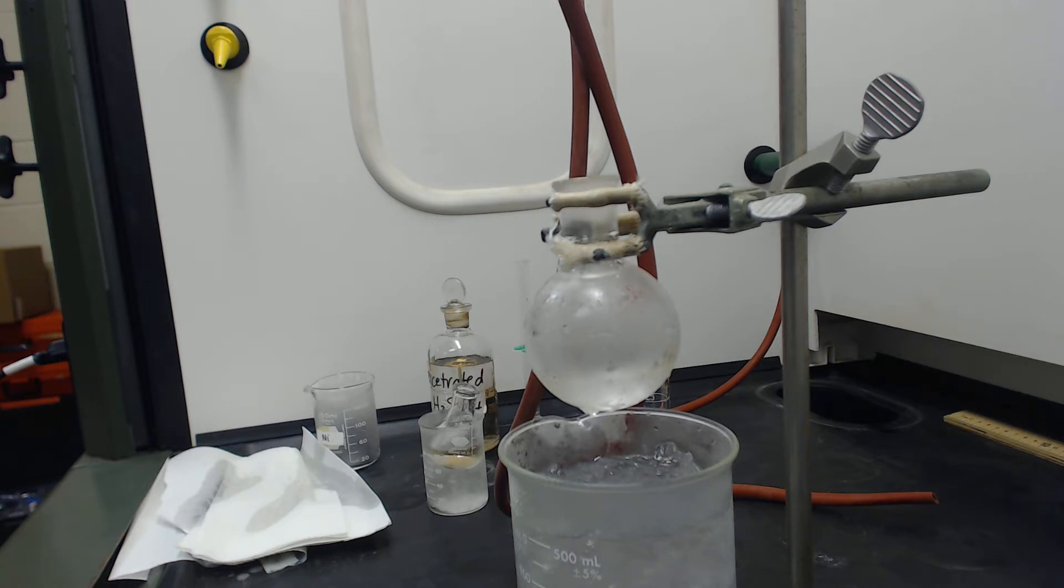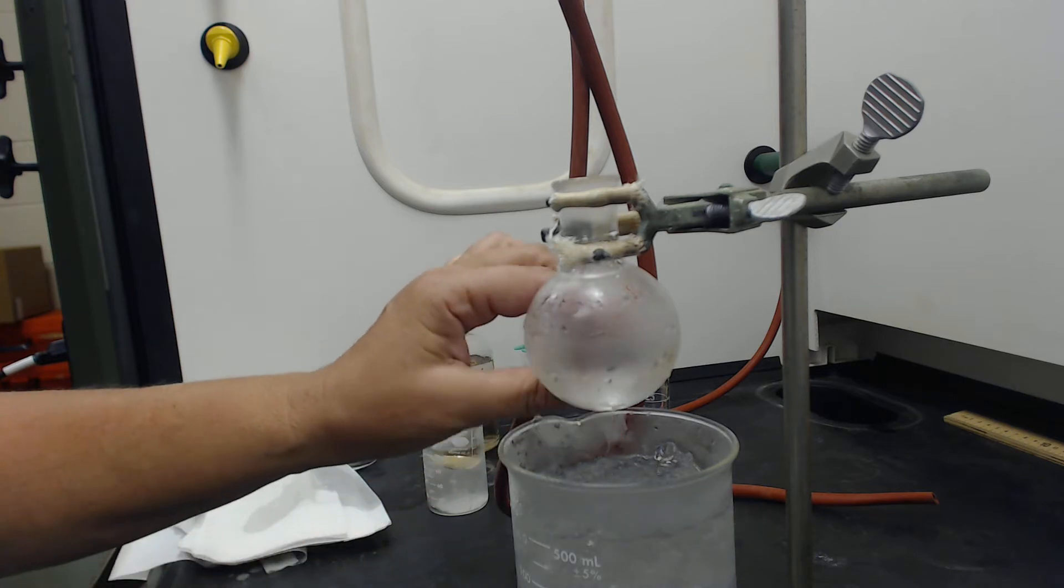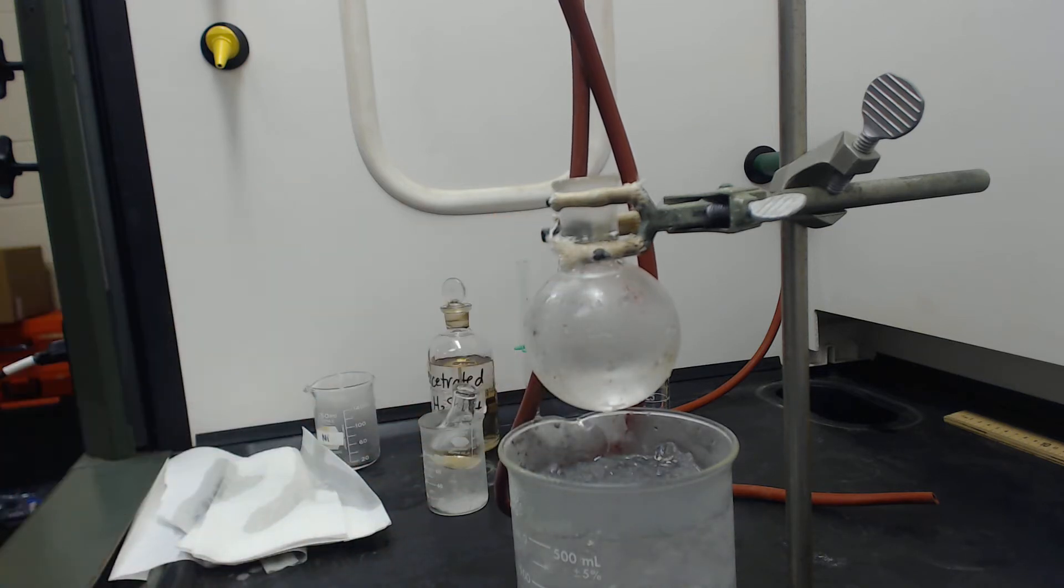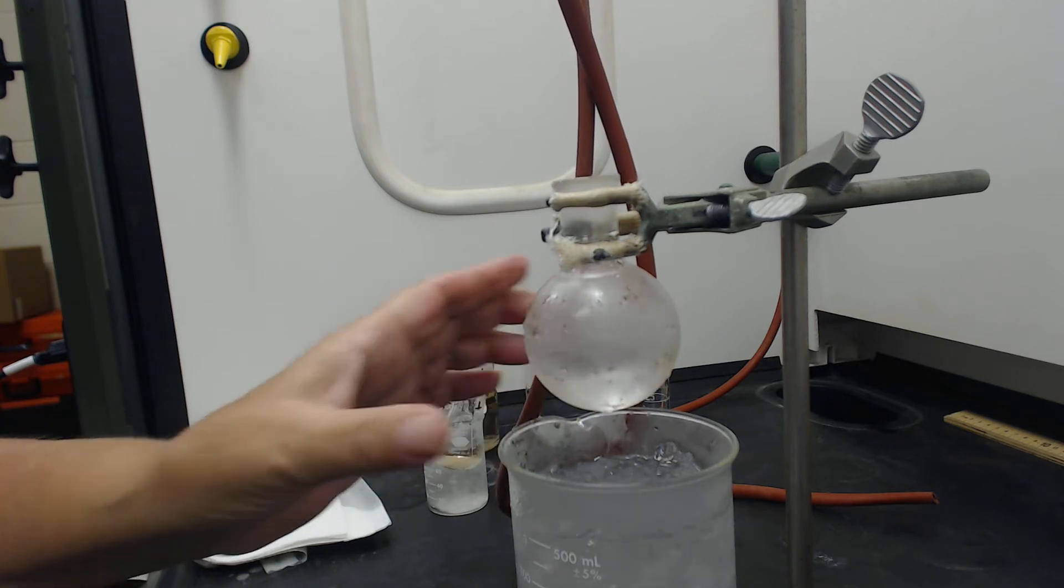We are going to be using the second preparation method in the introduction. I've already kind of started. I've already added 12 grams of sodium bromide into this flask and I've added 12 mL of water.